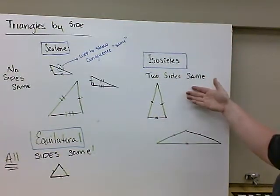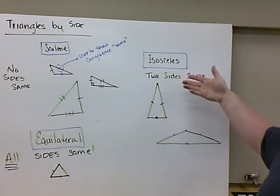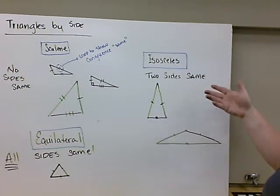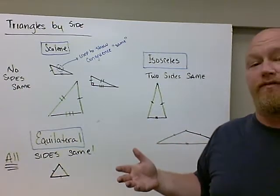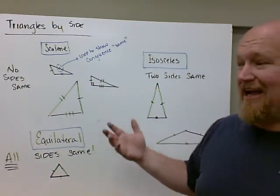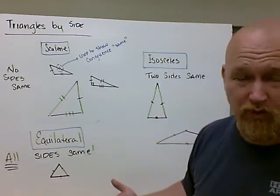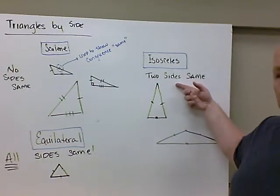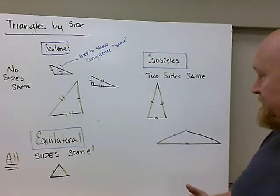If we have two sides the same, it's called an isosceles. That's spelled I-S-O-S-C-E-L-E-S. If that's a word you're going to confuse spelling, don't sweat it. Honestly, I got a master's degree, and I had to look it up before I wrote it down.